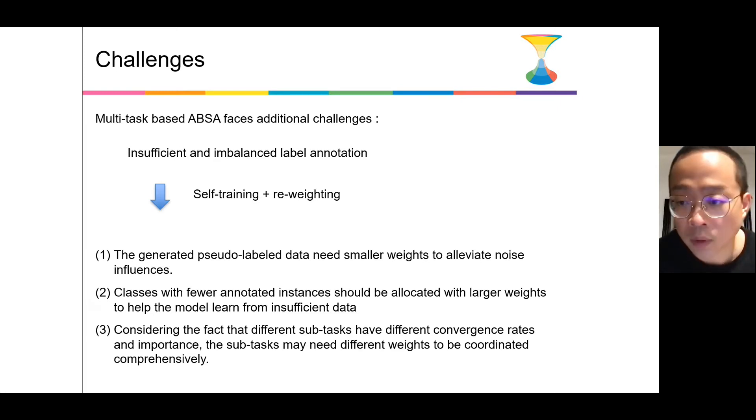Additionally, when applying self-training, we also need to focus on three actual issues. First, the generated pseudo-labeled data needs smaller weights to alleviate noise influence. Second, classes with few annotated instances should be allocated with larger weights to help the model learn from insufficient data. Last, considering that different subtasks have different convergence rates and importance, these subtasks may need different weights to be coordinated comprehensively.